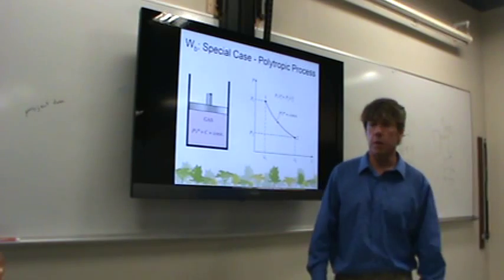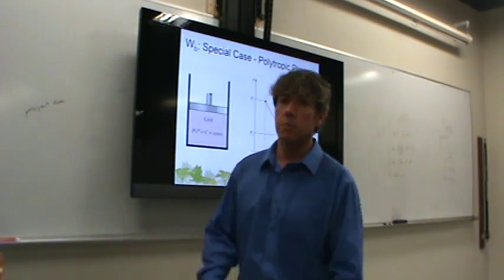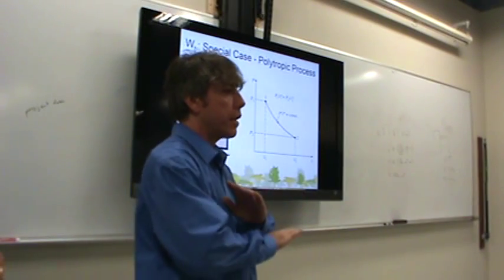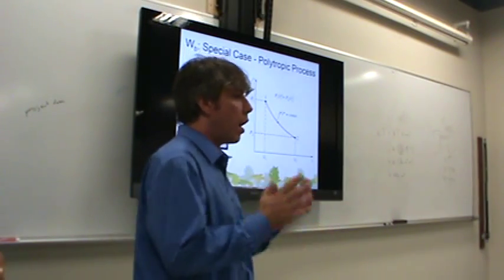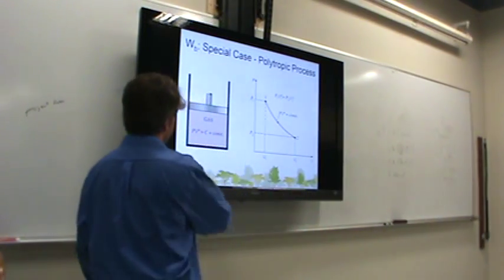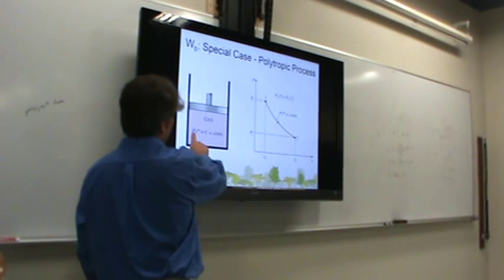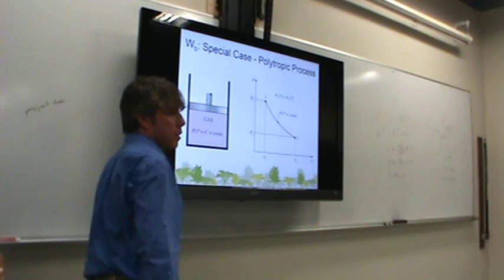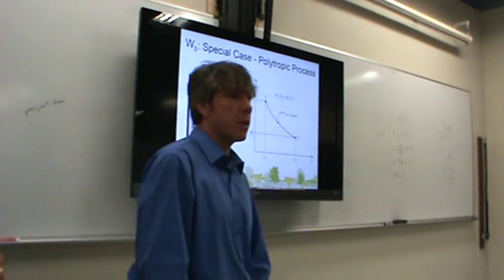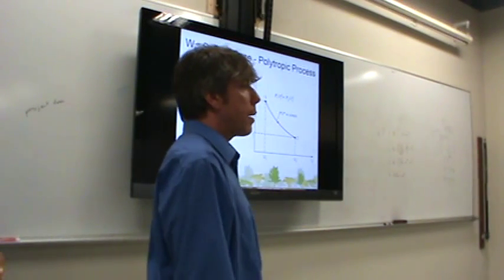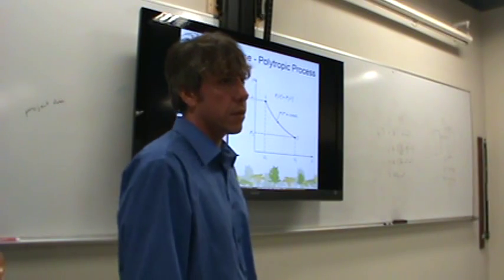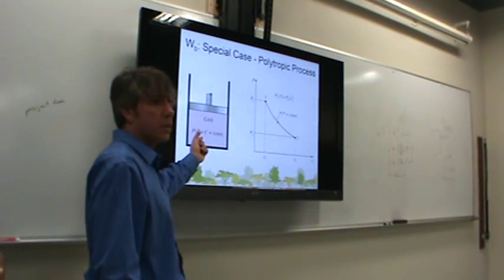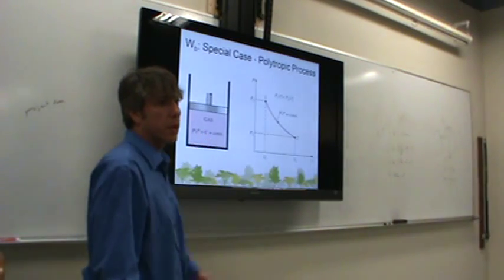It turns out there are some gases or some processes where the gas behaves polytropically. That doesn't have anything to do with ideal gas. All it means is that the gas obeys this relationship: pressure times volume to some power equals a constant. That's all polytropic means, nothing more, nothing less. The n is an exponent that is a constant yet to be determined.